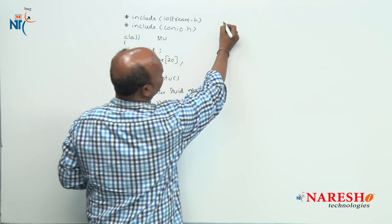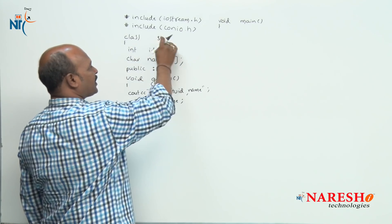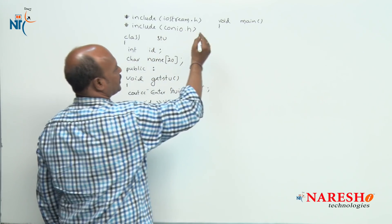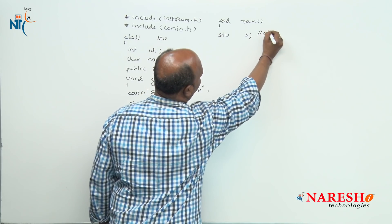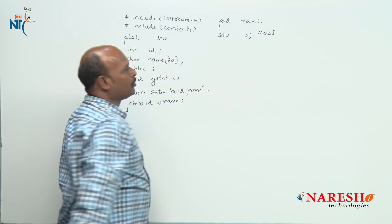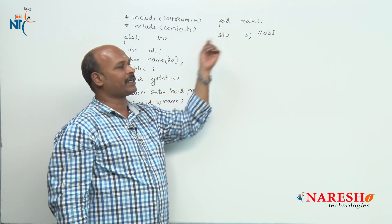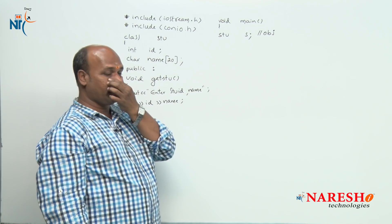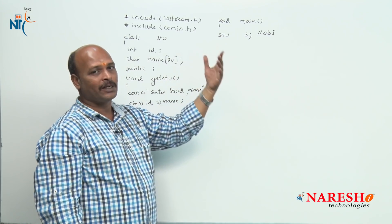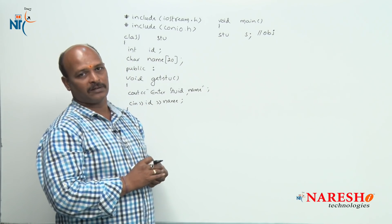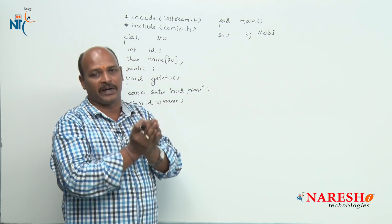Now I am going to the main function. When there is a class we should create an object — so 'stu' is the object of the student class. Now we have to send this object's data into a data file, so first of all we need to open a data file.